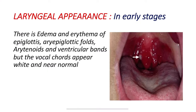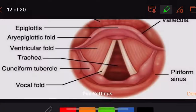Examining the laryngeal appearance in laryngitis: in the early stages, there is edema (swelling) and erythema (redness) of the epiglottis, aryepiglottic folds, arytenoids, and ventricular bands. However, the vocal cords appear white and near normal. The epiglottis and aryepiglottic folds are visible anatomical structures; the aryepiglottic folds form the boundary with the aryepiglottic space in between.